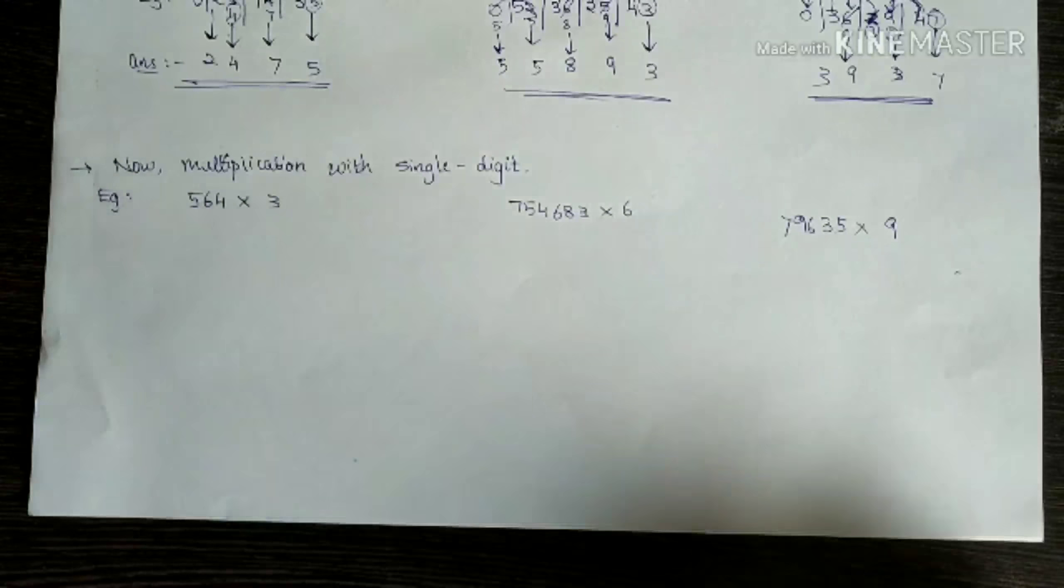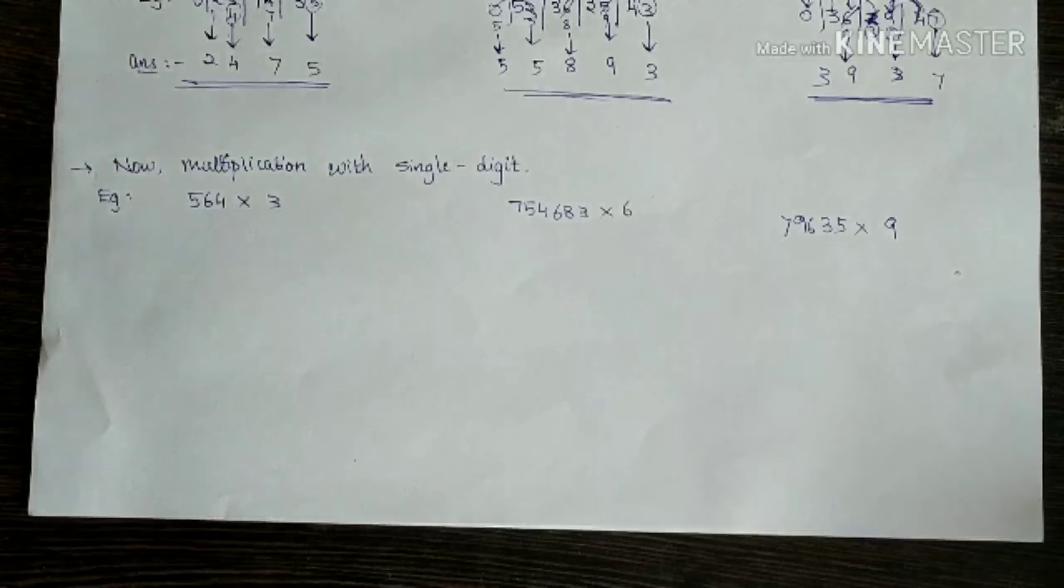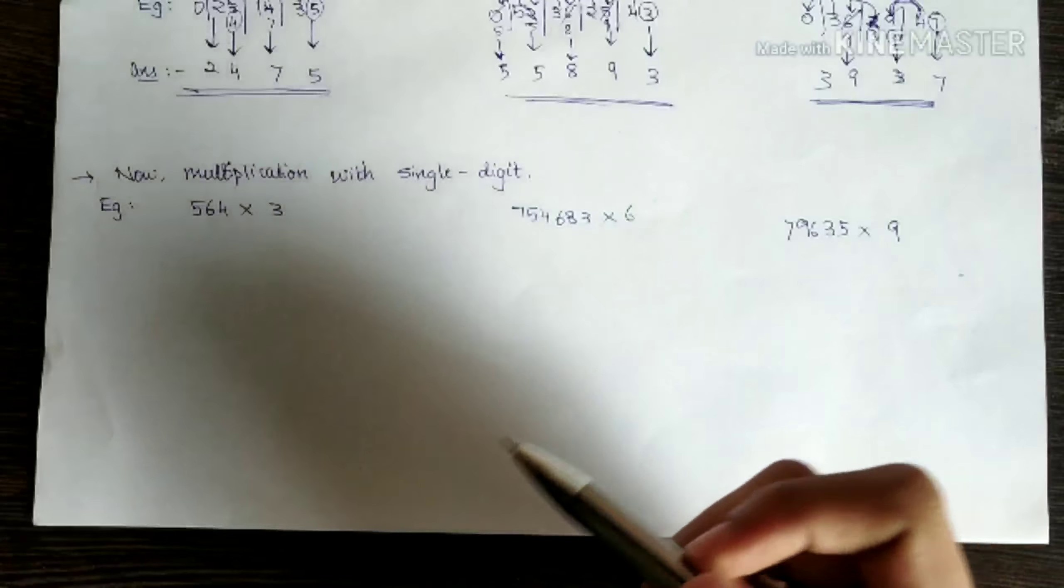Now let's get into the actual content of this video. That is multiplication with a single digit. I have picked up three examples. And these three are enough to show you how easy it becomes now. Instead of multiplying each and every number and finally adding it, this is a way simpler method.